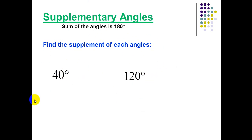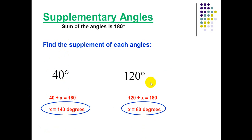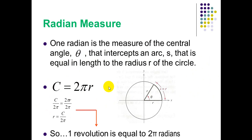Supplementary angles: the sum of two supplementary angles is 180°. Find the supplement of each angle — 40° and 120°. What is the supplement of 40°? 40 plus 140 equals 180, so 140° is the supplement of 40°. For 120°: 120 plus 60 equals 180, so 60° is the supplement of 120°. Summary: coterminal angle equals the angle plus or minus 360° or one revolution. To find a complementary angle: 90 minus the angle. To find a supplementary angle: 180 minus the angle.